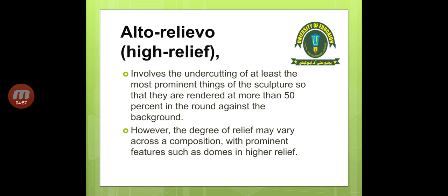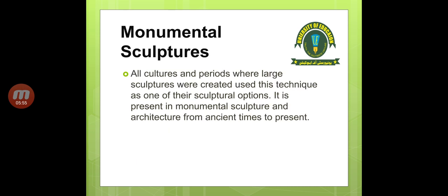Alto-relief involves the undercutting of at least the most prominent parts of the sculpture so that they are rendered at more than 50% in the round against the background. Here you have to use the undercutting technique and make it at least 50% round shape against the background. However, the degree of relief may vary — it can be 40%, 60%, or 70% — that choice is up to you.